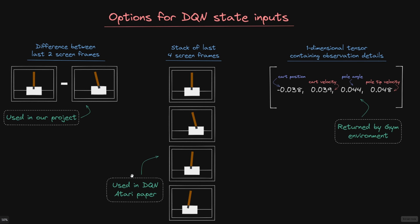As another option, which was implemented in the original paper that used a DQN to solve Atari environments, the authors there used a stack of the last four screen frames and then passed this stack of pixel data as input to the network.